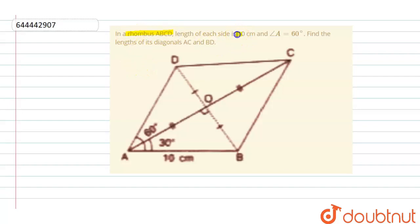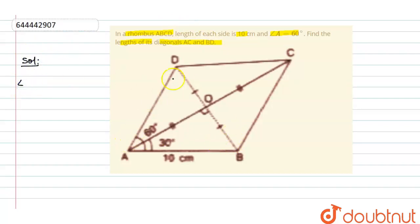The question is: in a rhombus ABCD, the length of each side is 10 centimeters and angle A equals 60 degrees. Find the length of its diagonals AC and BD. According to the question, the given data is angle BAD equals 60 degrees.